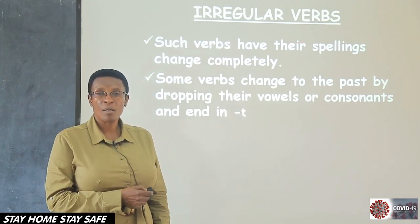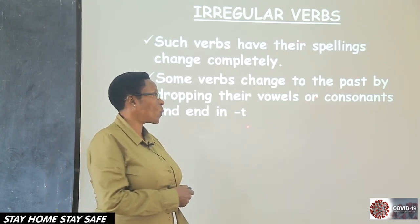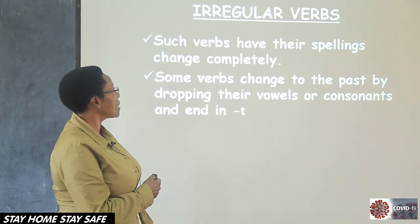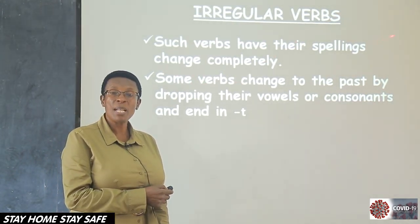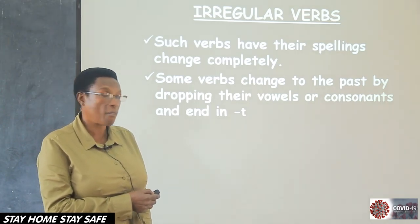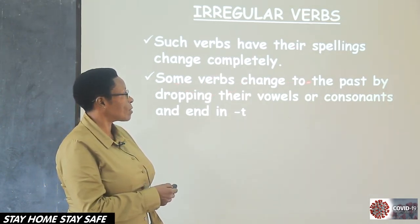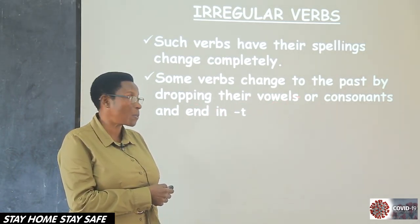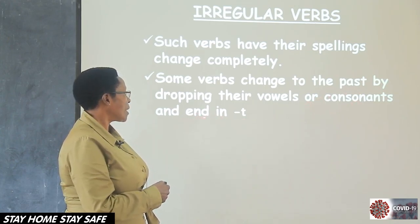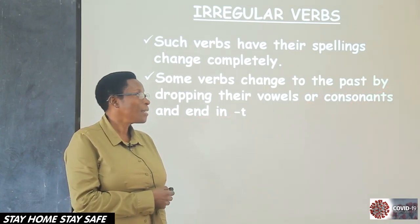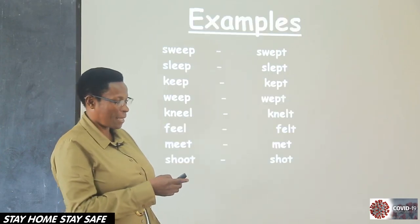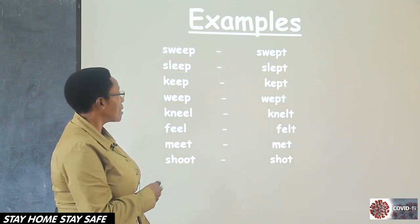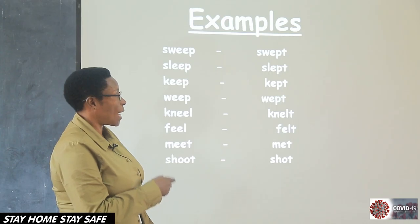Okay, let's go to the lesson now. Lesson 18 of English. As I said, these are called irregular verbs. Why are they called irregular? They change in different ways. Such verbs have their spellings change completely. Some verbs change to the past by dropping their vowels — verbs that have vowels which are dropped, or consonants — and they end in a T.